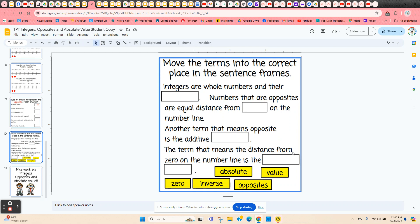The very last slide has students moving these terms into the correct place in sentence frames. So it's just a review of everything they've just learned. Integers are whole numbers and their opposites, and they're just going to click and hold on the edge and move that into place. And they're going to do the same with the other terms.